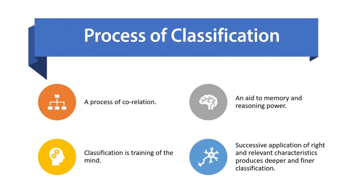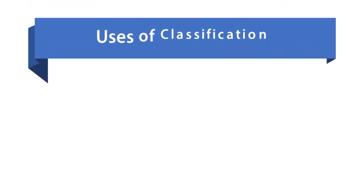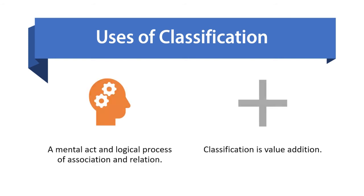Now we will discuss what are the uses of classification. Why we are using classification. So, classification is a mental act. It is a mental act and logical process of association and relation. It goes on every moment of life. Sometimes knowingly. Sometimes unknowingly. Sometimes deliberately or unconsciously. But, it goes. It goes every moment of life. All human beings, whatever they do, have to classify. In every sense of the word.